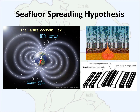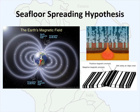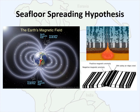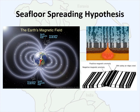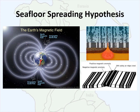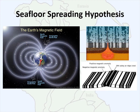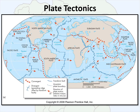Through the work of Vine and Matthews, coupled with Hess and Tharp and Heezen, in addition to the earlier work by Wegener which had been previously rejected, all of this taken together is what built the theory of plate tectonics, which is what we have today.